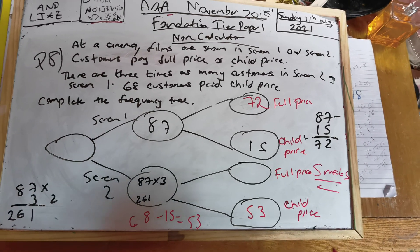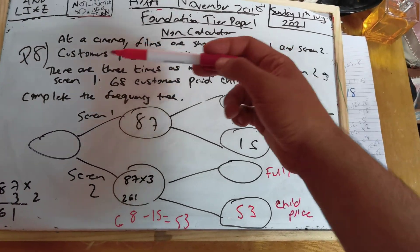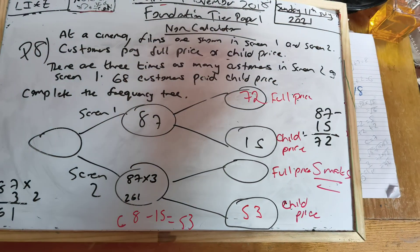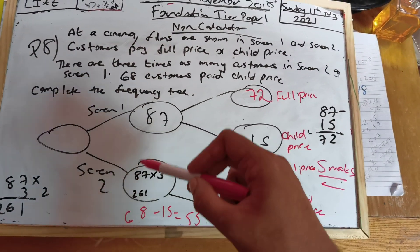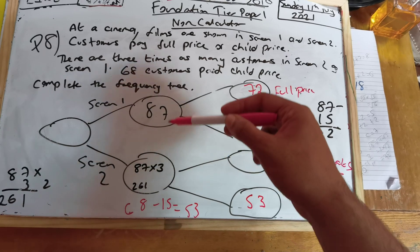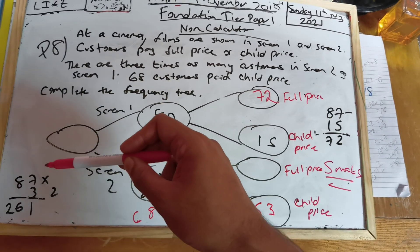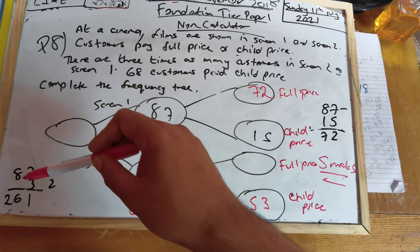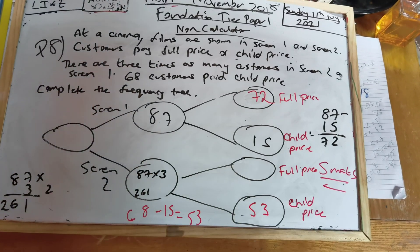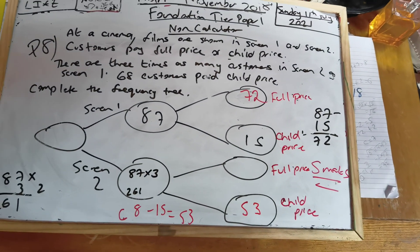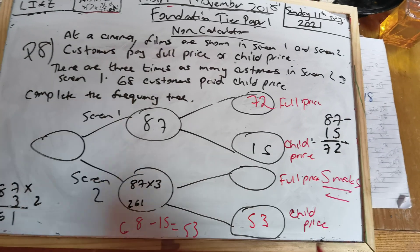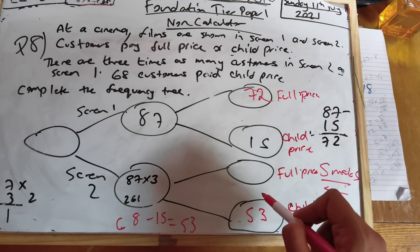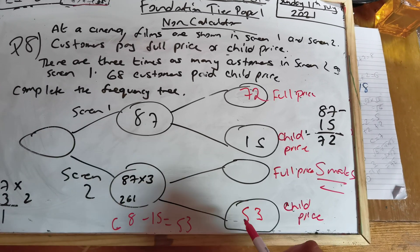The last part: it says there are three times as many customers in screen 2 as in screen 1, so screen 2 is going to be 3 lots of 87. 3 times 87: 7 times 3 is 21, carry the 2; 3 times 8 is 24, add the 2 is 26 — so there are 261 people in screen 2.